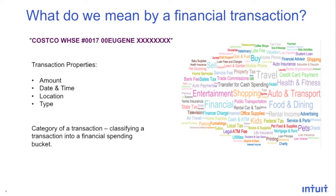What do we mean by transaction type? A type can be either a credit, debit, or it can be a loan or a mortgage. Based on these properties, a category of transaction is determined. The transaction can be further classified as shopping, food and dining, or other types. For example, if a consumer goes to a restaurant, orders some food, and pays the bill, that transaction would be classified as food and dining. On the right-hand side we see different categories of a transaction.